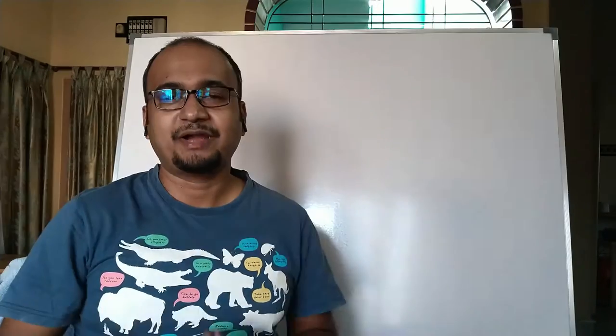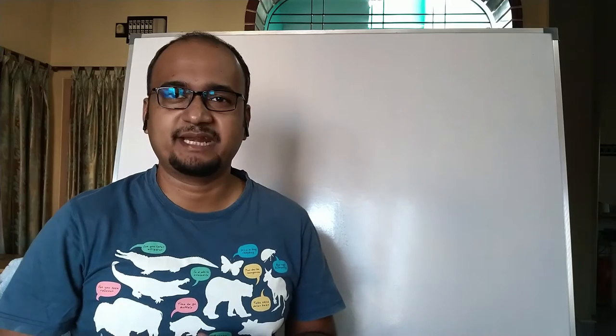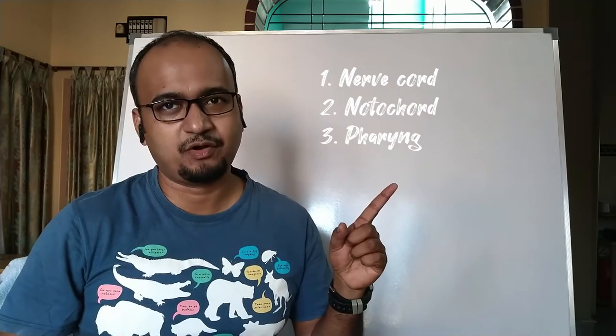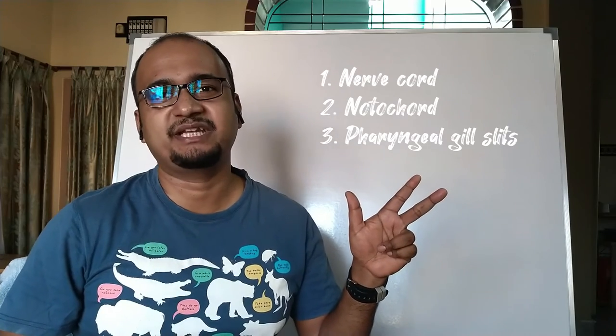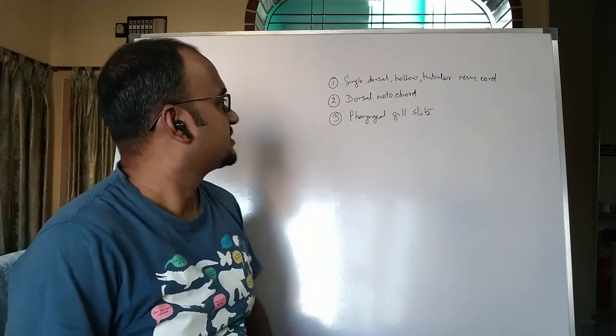Students, attentively watch the video till the end. Phylum Chordata is characterized by three characters: number one, presence of nerve cord; number two, presence of notochord; and number three, presence of pharyngeal gill slits.